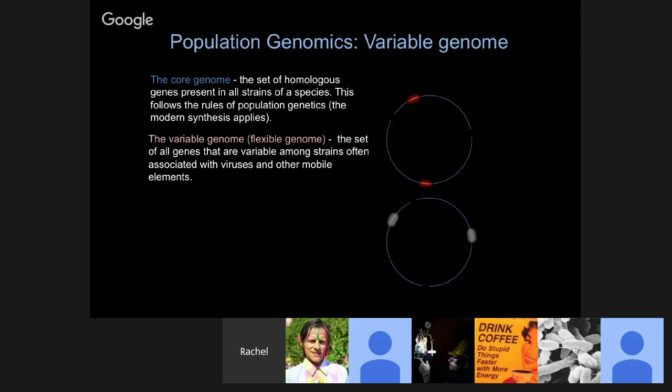What I find particularly complicated about looking at microbial genomes is the variable genome, or what some people call the flexible genome — the set of genes not shared among strains. What's so complicated about it is that it's often associated with viruses or other mobile elements like plasmids, conjugative transposons, or things like that. The rules for studying population genomics change because now we have two interacting evolutionary units: the host and the virus, the host and the plasmid.